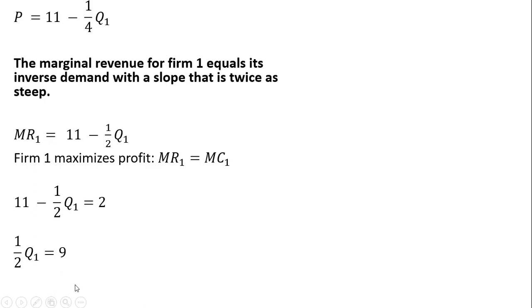Multiplying through by 2, we get 2 times 9, so Firm 1 will produce 18 units of output.